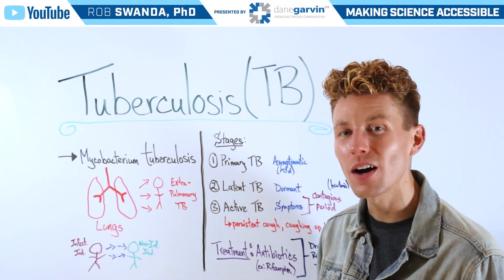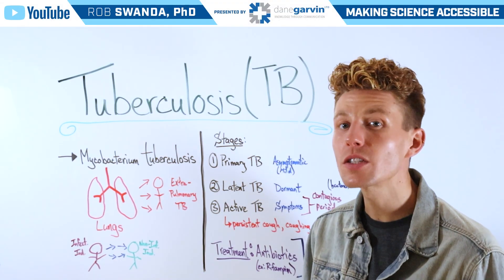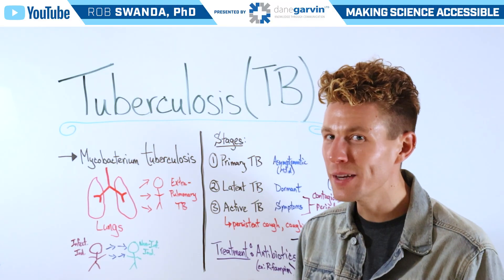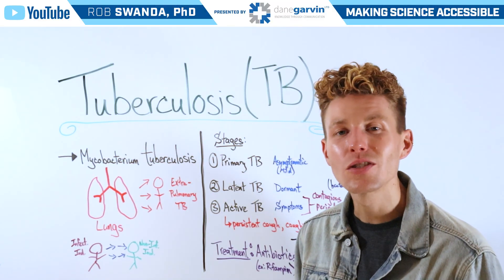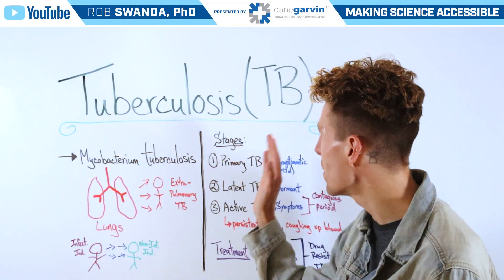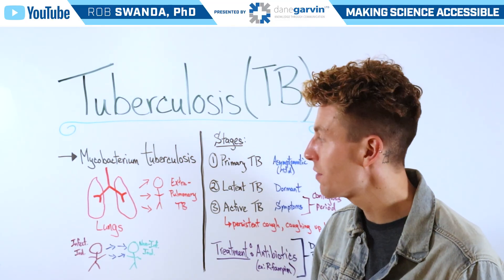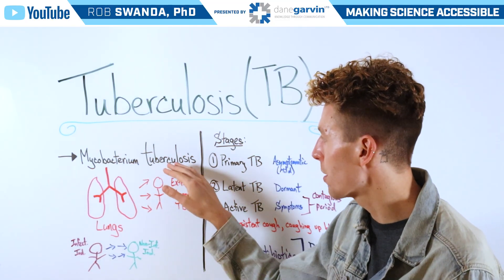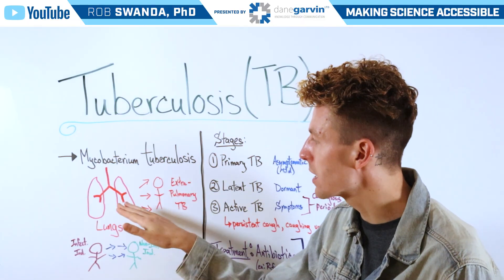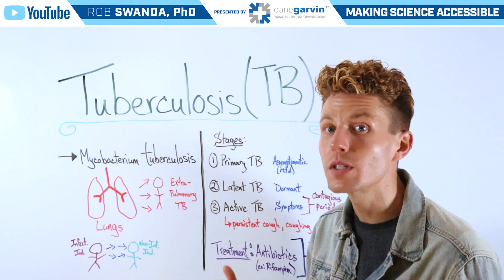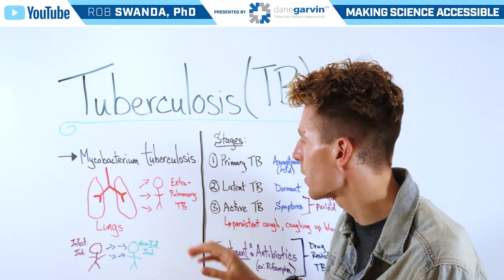In a past video, we talked about how the antibiotic rifampin works to treat tuberculosis, but we never gave an overview of the condition itself. So for today's video, let's talk about TB. This is caused by a bacterial infection known as Mycobacterium tuberculosis that primarily attacks the lungs; however, if it moves to other parts of the body, it's referred to as extra pulmonary TB.